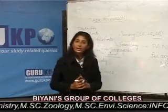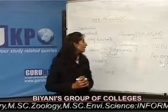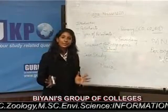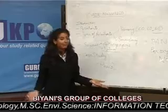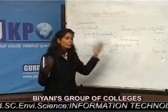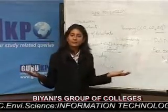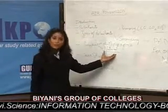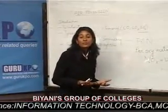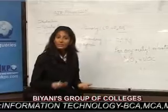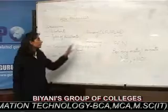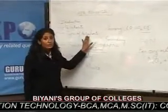Anthropogenic means caused by human activities. We know that each and every human activity is hazardous for our environment — for example, the use of vehicles and different kinds of industries. In natural sources, we can count volcanic eruptions and soil erosion. Soil erosion is a very significant source of suspended particulate matter.